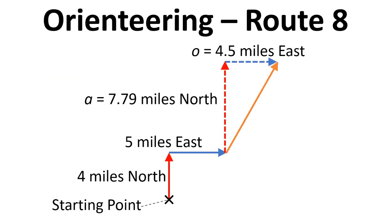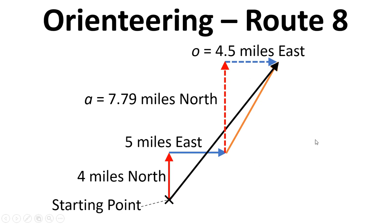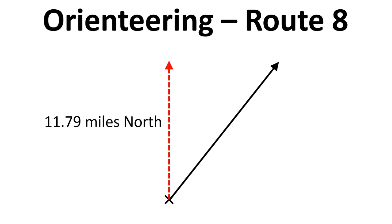Now putting this back into the big picture, we can see that our overall displacement north is the 4 miles we travelled in a straight line plus another 7.79 miles north as a result of going along the 9-mile leg at 30 degrees from north. In terms of east, we've gone 5 miles east directly, and then another 4.5 miles east as a result of going along this diagonal. Combining this information, we've gone 11.79 miles north in total and 9.5 miles east in total.